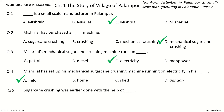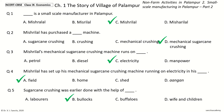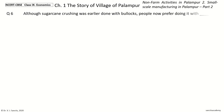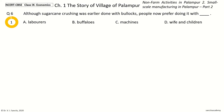Question 5: Shurakane crushing was earlier done with the help of dash. The options are Laborers, Bullocks, Buffaloes, Wife and Children. The answer is Bullocks. Question 6: Although shurakane crushing was earlier done with Bullocks, people now prefer doing it with dash. The options are Laborers, Buffaloes, Machines, Wife and Children. The answer is Machines.